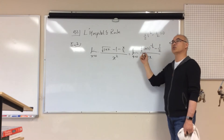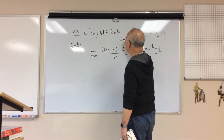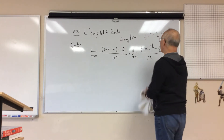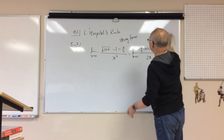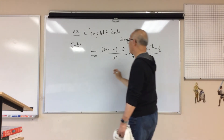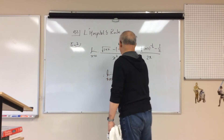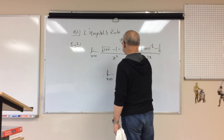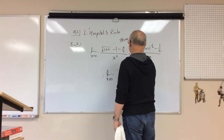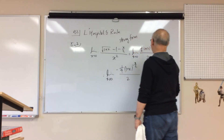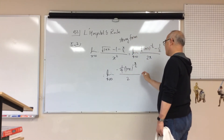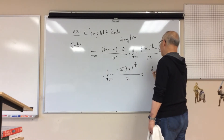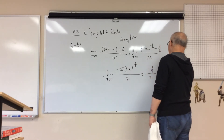So L'Hopital's rule should work again — we call this the strong form, because we have to apply L'Hopital's rule twice. Taking the derivative one more time: the derivative of the bottom gives 2. The derivative of the top gives −(1/4)(1+x)^(−3/2). When x goes to 0, (1+x) becomes 1, so I get −1/4 over 2, which equals −1/8.